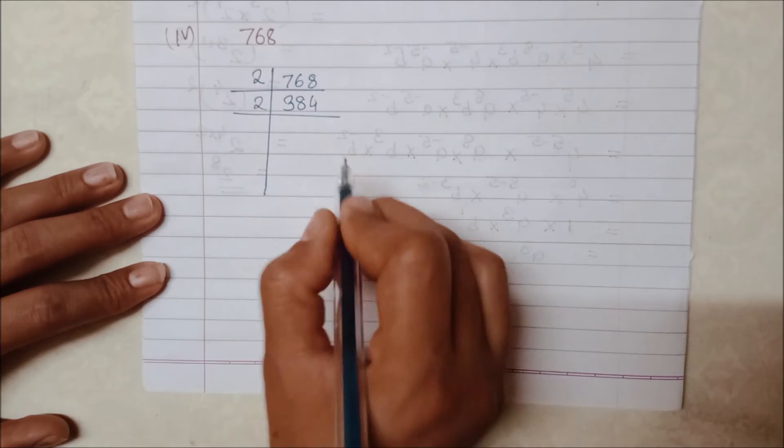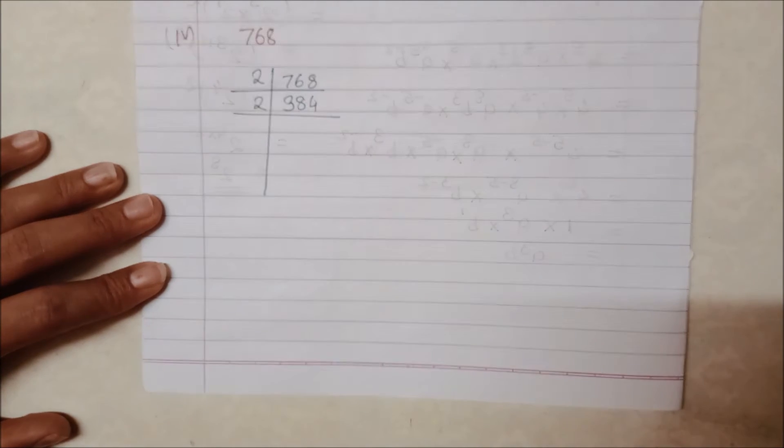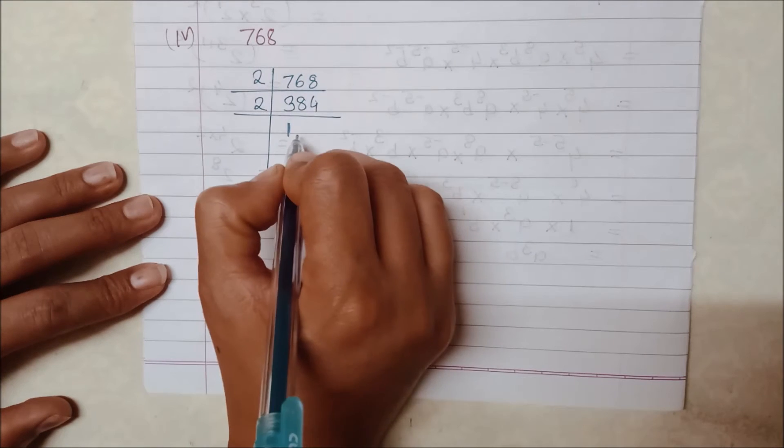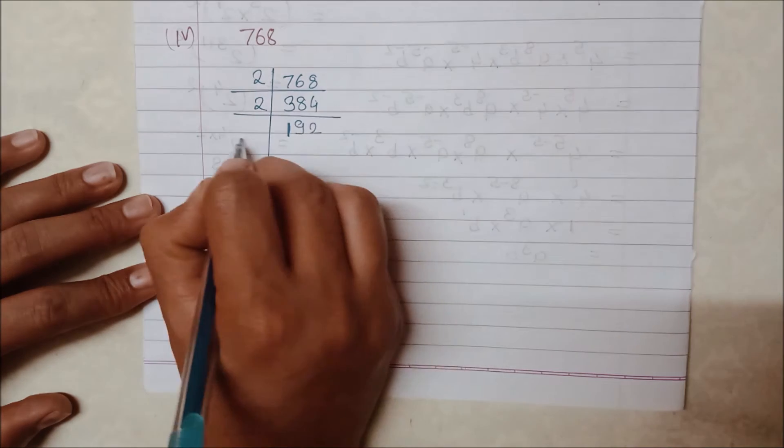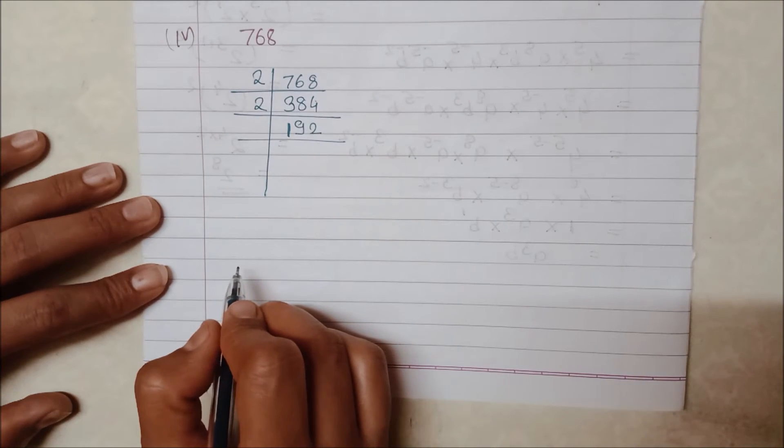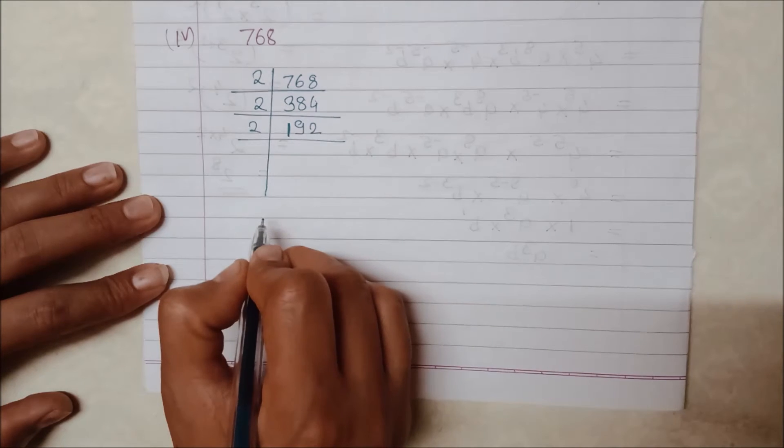384 is divided by 2 because it is an even number. We will divide by 2 to get 192, then 96. Again, the 192 is an even number, so 2 divides it to give 96.